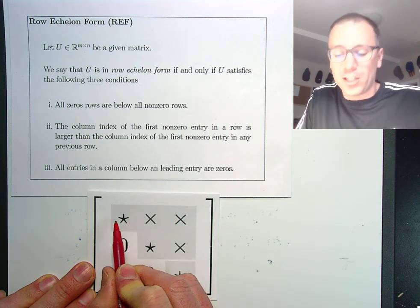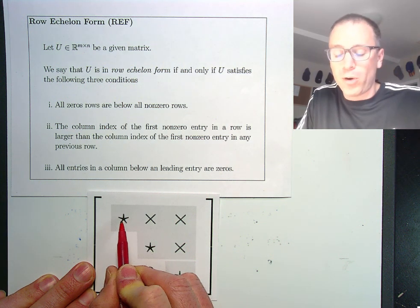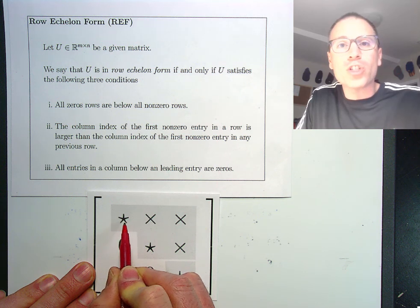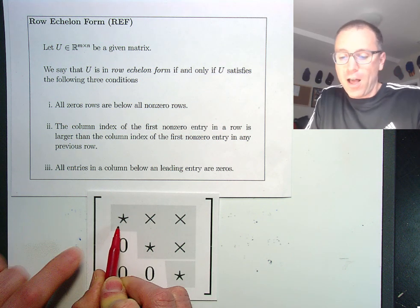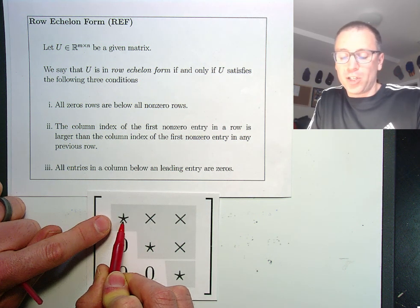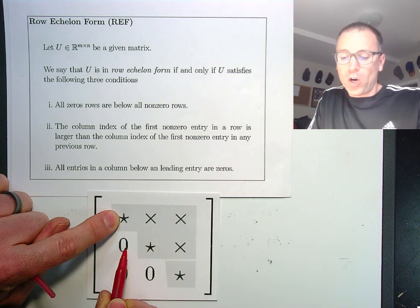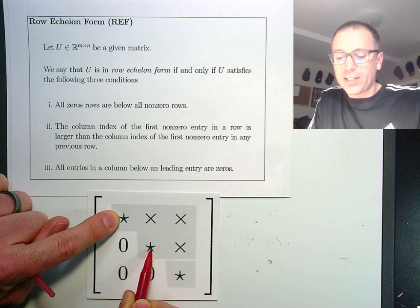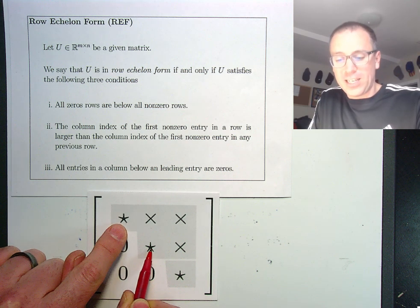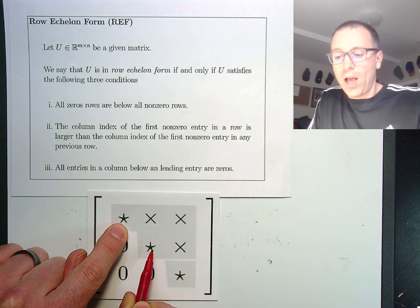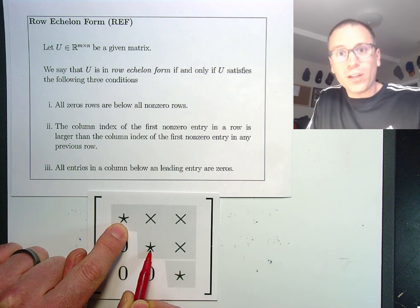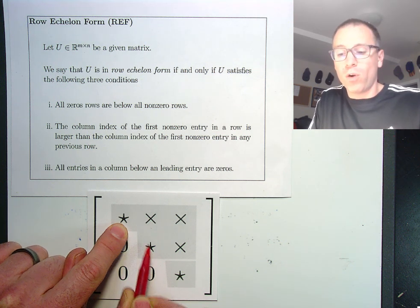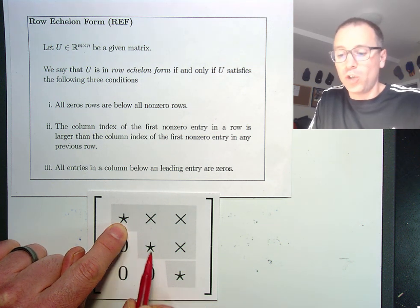So a leading entry is the first non-zero entry. We saw in the notation from previous lessons, we used stars to represent non-zero. So notice the leading entry in row one is in position 1,1. When we go down to row two, it's in position 2,2. The column index there is 2. The column index here is 1. So in row two, the leading entry has column index 2. In row one, the leading entry has column index 1. 2 is bigger than 1. That condition is satisfied.